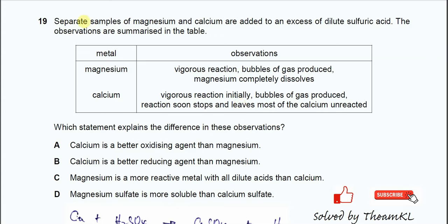Question 19. Separate samples of magnesium and calcium are added to excess dilute sulfuric acid. The observations are summarized in the table.